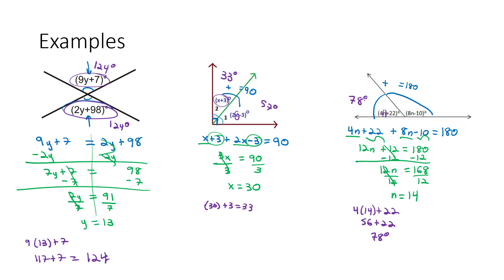The second angle we know is going to add up to 180. So 180 minus 78 is going to be 102 degrees. Or we could have done 8 times our n or 14 minus 10. And that would have also given us 102 degrees.